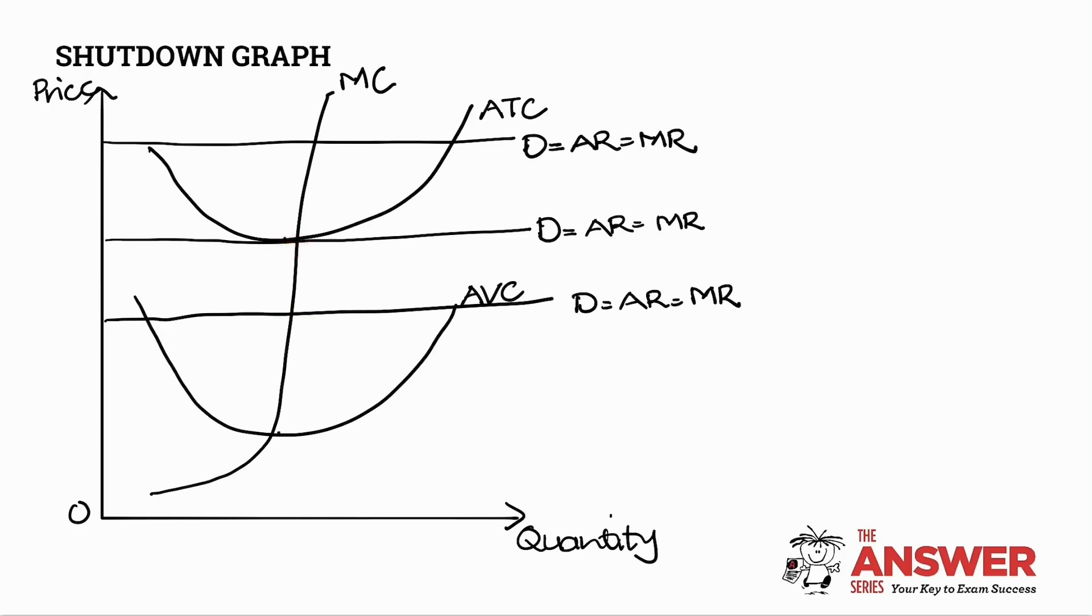What we've learned today is that where our marginal cost curve intersects with our average variable cost curve, in other words at that point there Grade 12s, that is in fact known as our shutdown point. So I'm actually just going to fill that in, shutdown point.